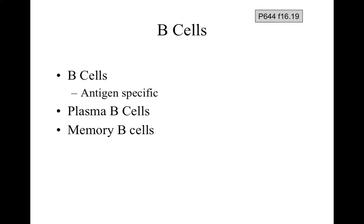B cells are antigen-specific, looking for a very specific antigen. They bind antigens and make copies of themselves — this works better with helper T cell assistance. They differentiate into either a plasma B cell, which makes antibodies, or a memory B cell, which responds more quickly to a future infection.